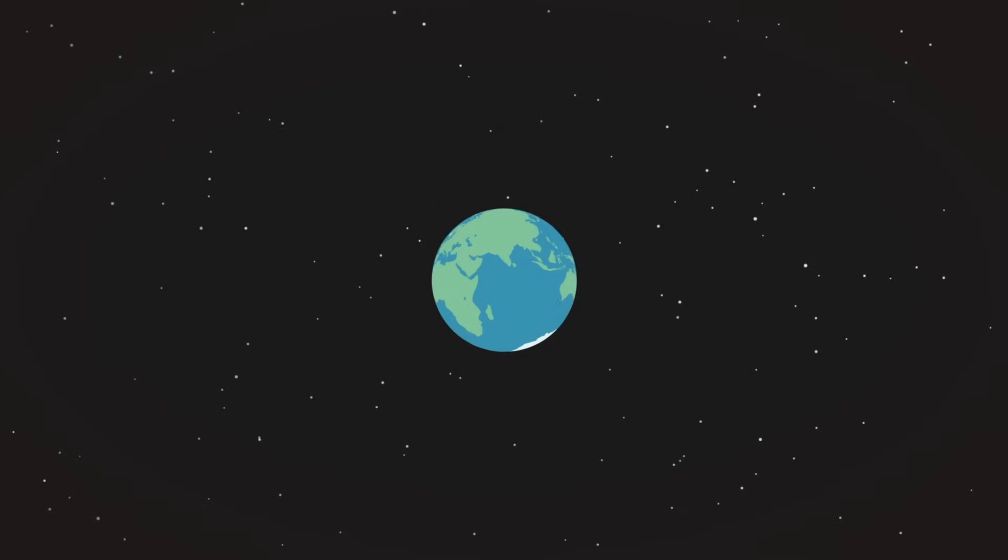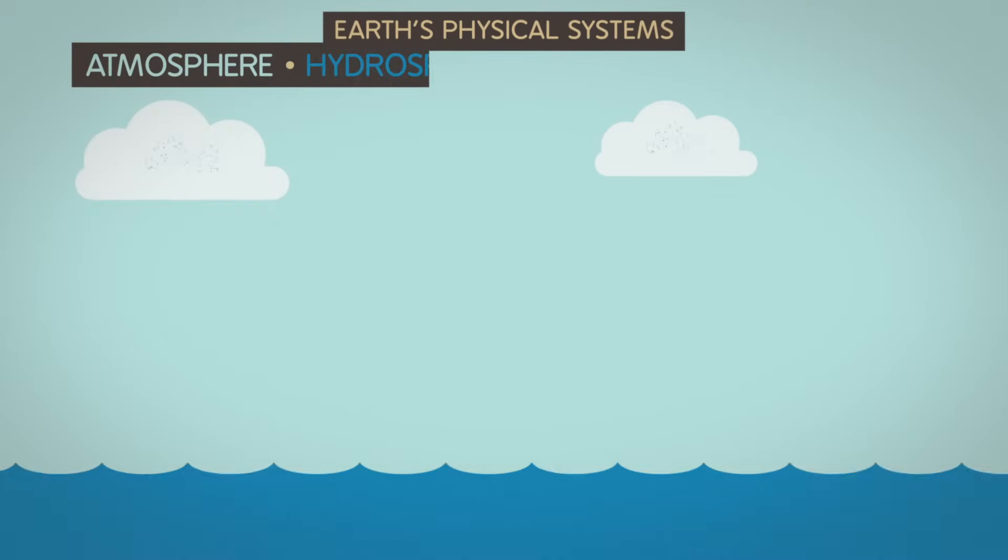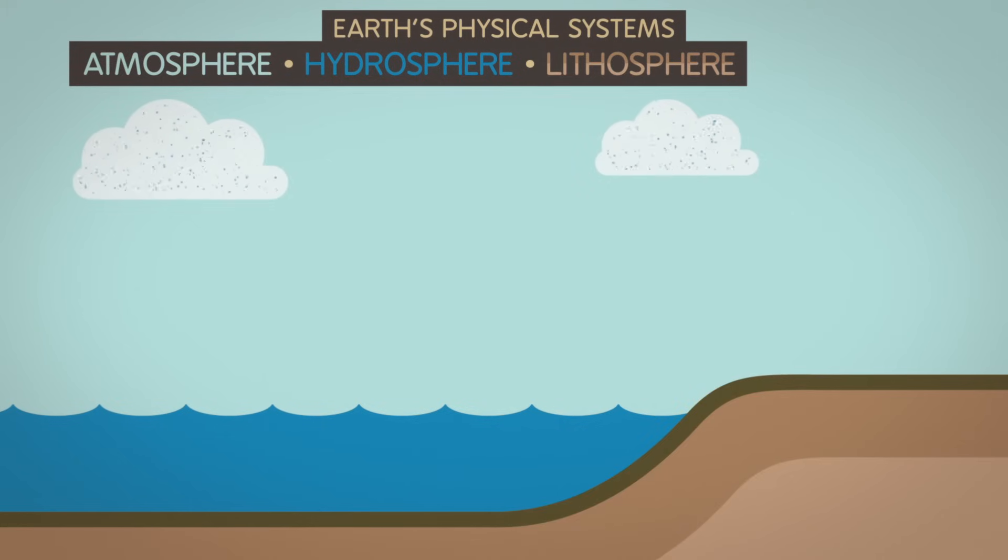But let's jump back up into space to look at our planet, its systems, and their energy flow. Earth's physical systems include the atmosphere, hydrosphere, lithosphere, and biosphere.